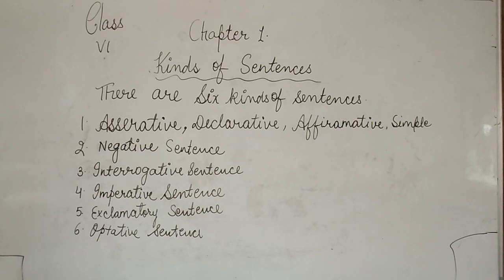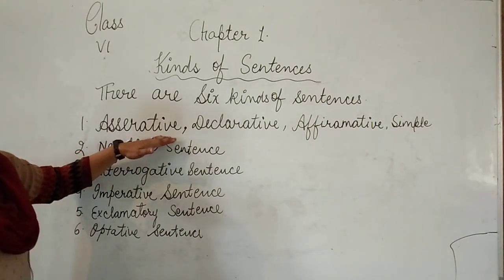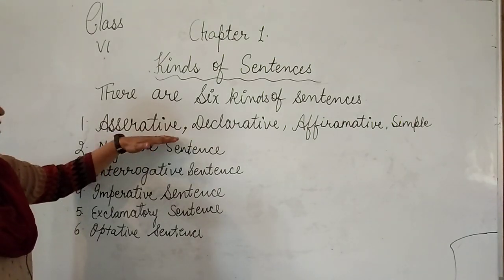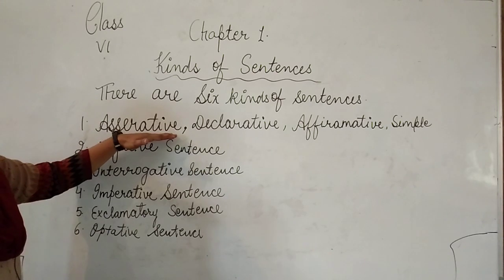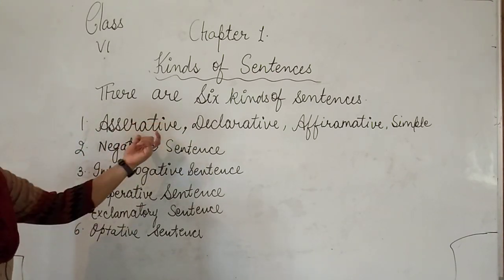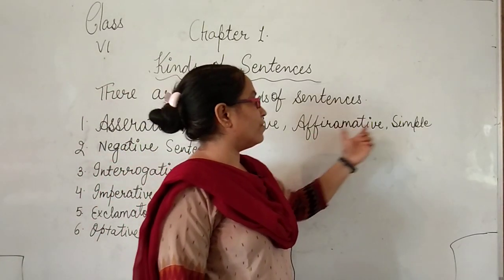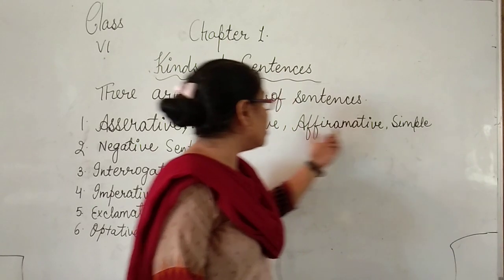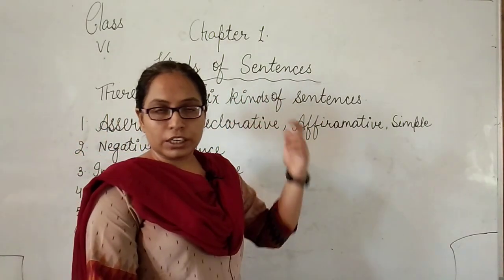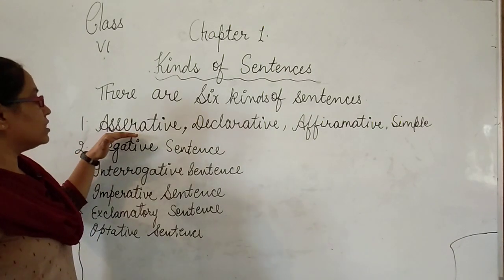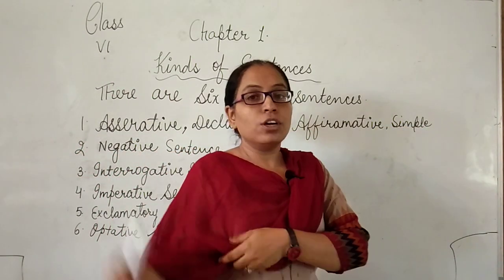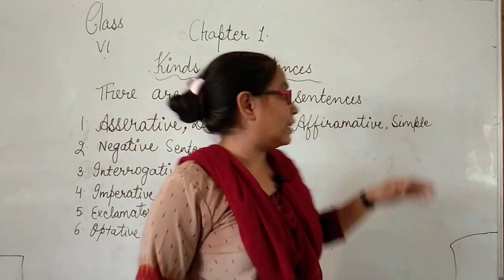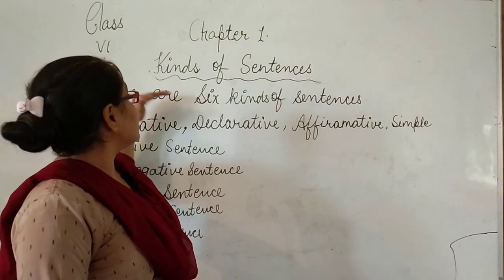Now we learn about the six kinds of sentences in English grammar. Number one is the assertive sentence. Various books use different names for this type: assertive, declarative, affirmative, and simple. You can find any one of these names in your book. Don't get confused — these all refer to the same first kind of sentence.